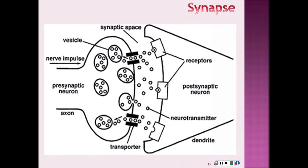Here we're going to look at the diagram. Here is your presynaptic neuron and here is your postsynaptic neuron. You have various vesicles that will carry the neurotransmitters, and you have various channels on the presynaptic neuron. On the postsynaptic, you're going to have receptors that will receive the neurotransmitter being released, and then it will travel to the postsynaptic neuron.